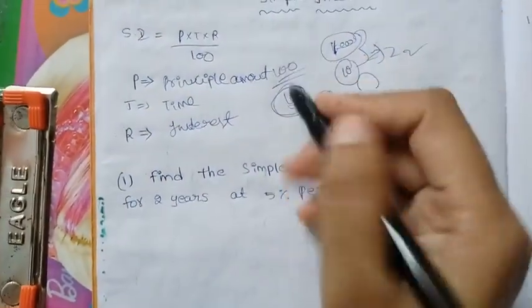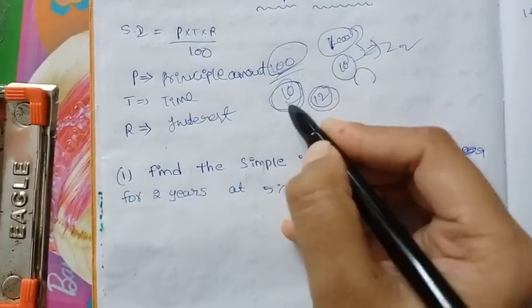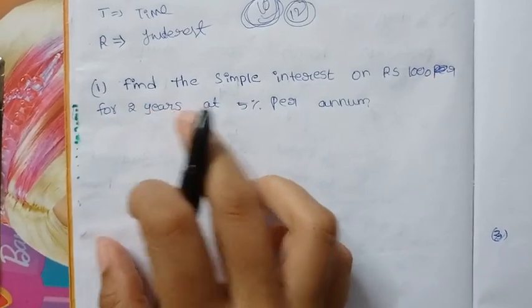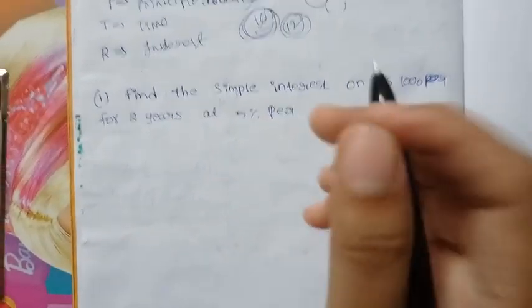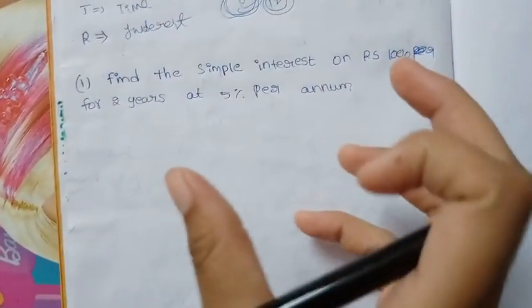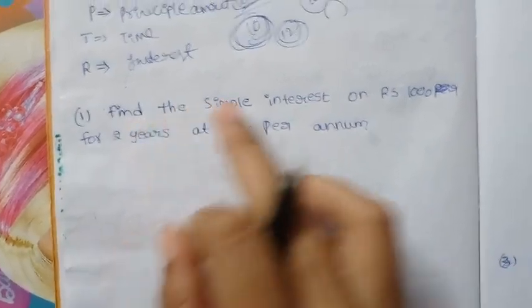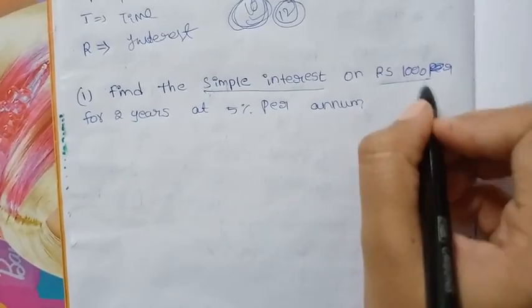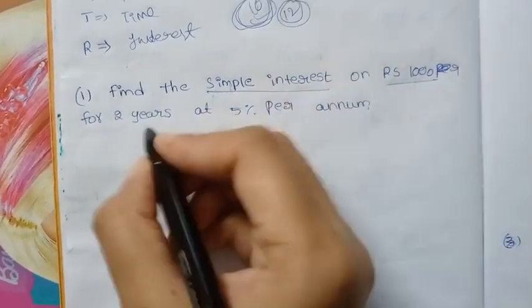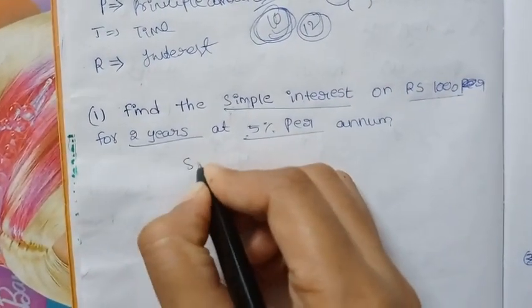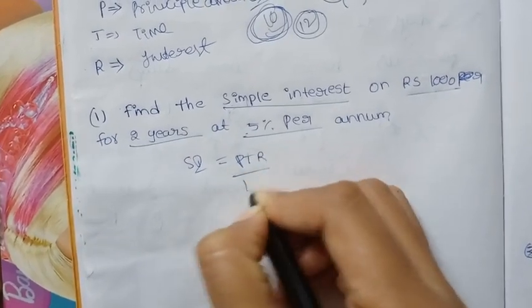This is the principal amount. This amount is 12 months and the rate of interest is 10 rupees. Find the simple interest on RS 1000 for 2 years at 5% per annum. The principal amount is 1000 rupees, time is 2 years, and interest rate is 5%.